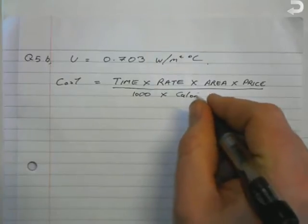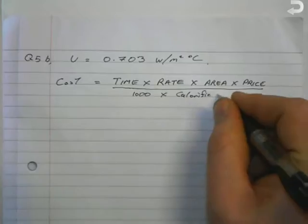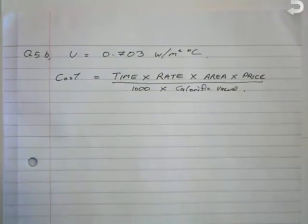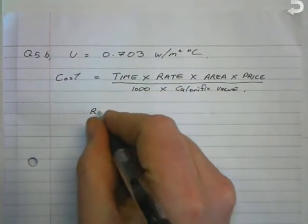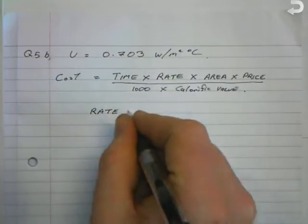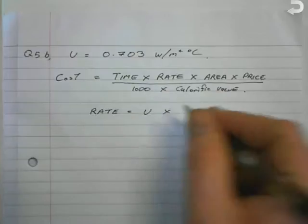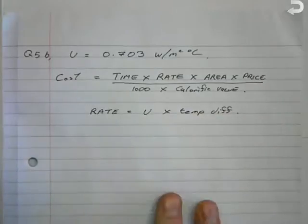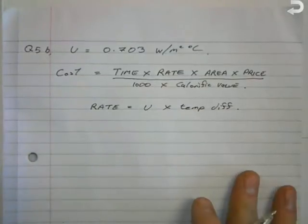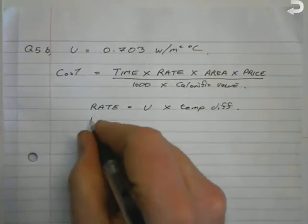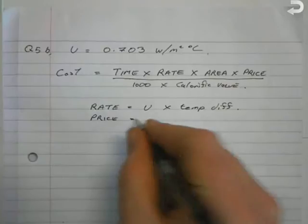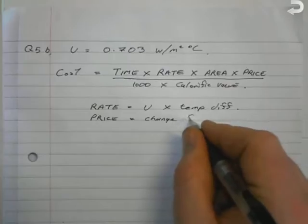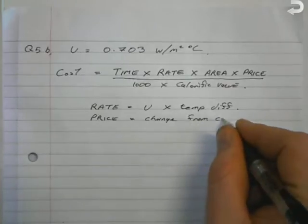All divided by one thousand multiplied by the calorific value. In the question, the rate is equal to the U-value multiplied by temperature difference. Area is quite standard. Price should be changed into euros, so change from cents to euros so that you get your answer in euros.